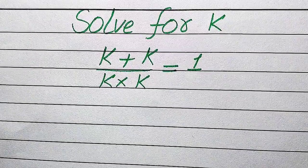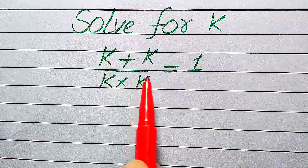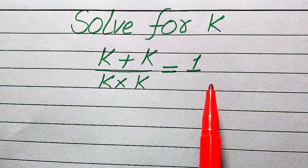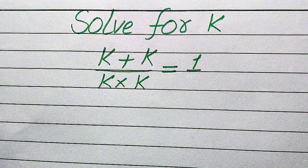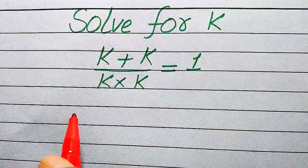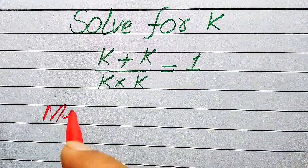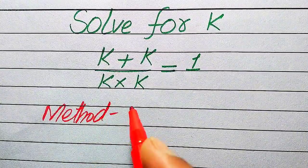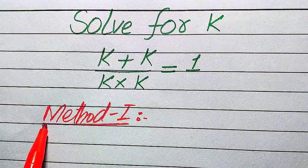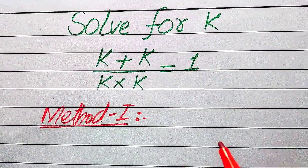Hello everyone. How to solve this problem for the values of k: k plus k divided by k, multiplied by k, equals 1. We solve this problem for all the values of k. First, we need to find all the roots of this equation, and at the end we will verify which roots are solutions and which are extraneous roots. We'll solve this problem using two methods.